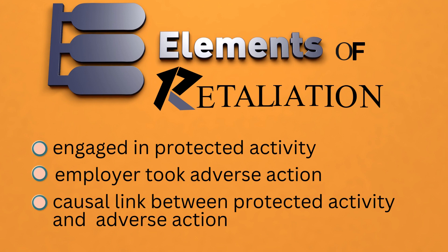To demonstrate this, let's use retaliation as a cause of action. It has elements the plaintiff must present. One, the plaintiff must show that he or she engaged in protected activity. Second, the plaintiff must show the employer took adverse action. And third, the plaintiff must show a causal link between the protected activity and the adverse action. These are the elements — think elements.